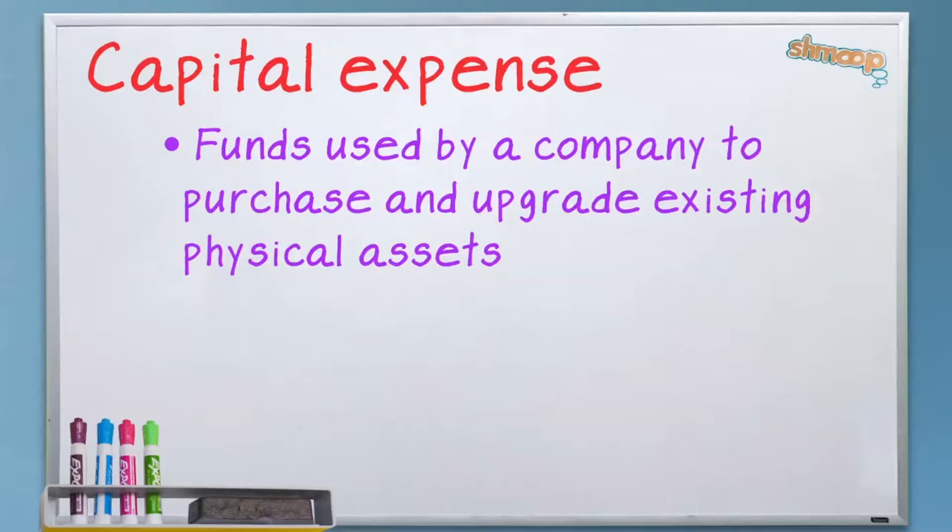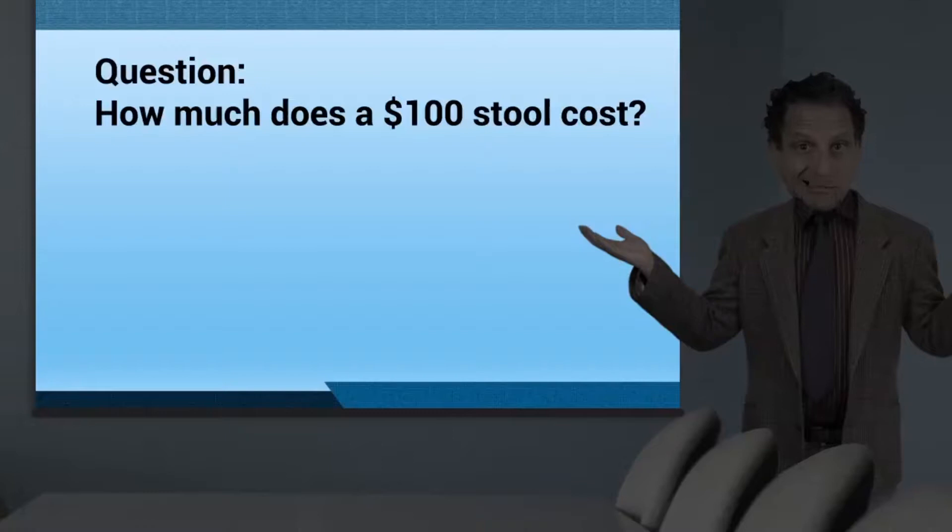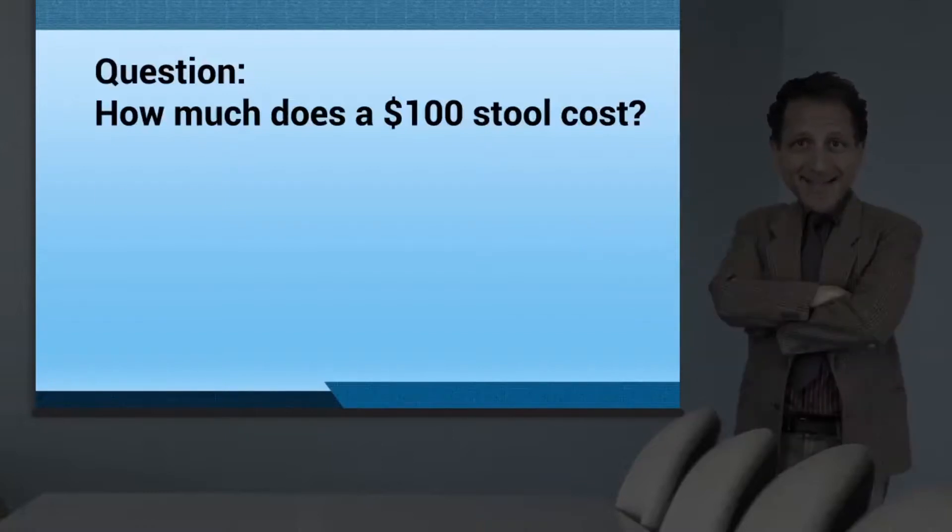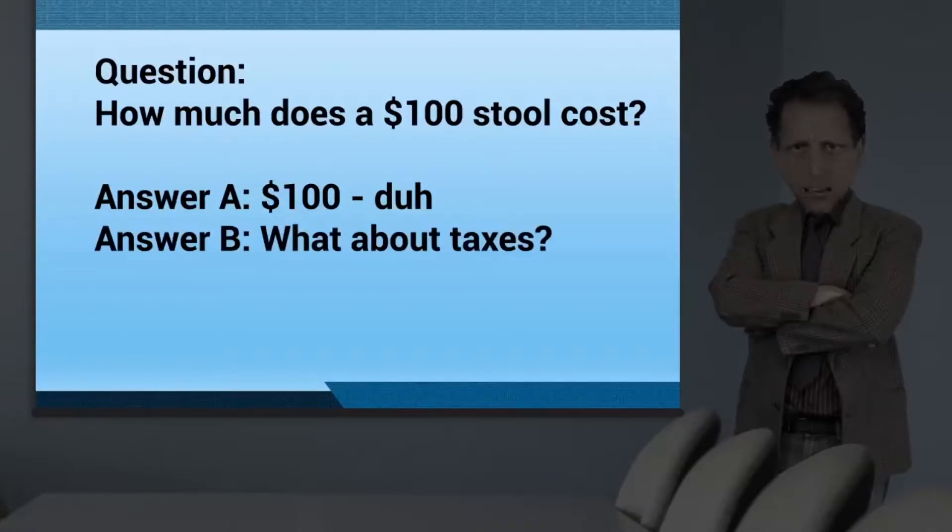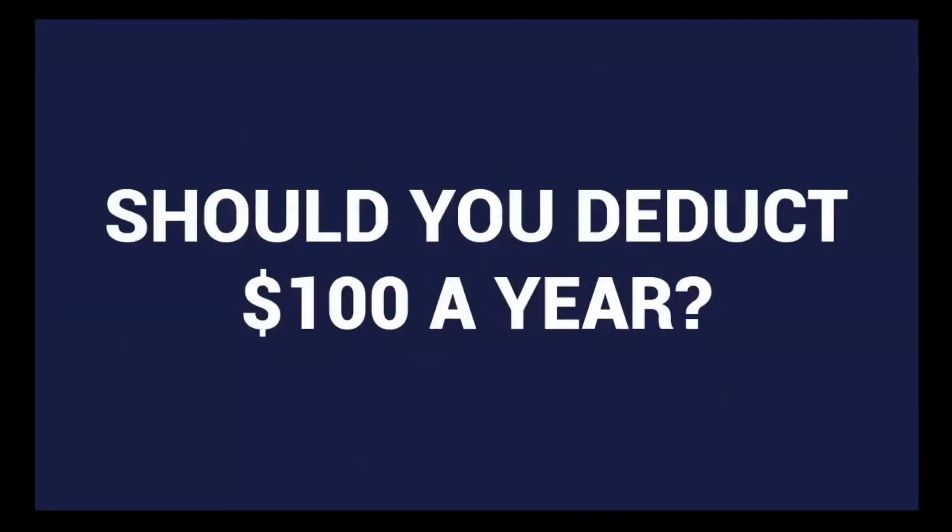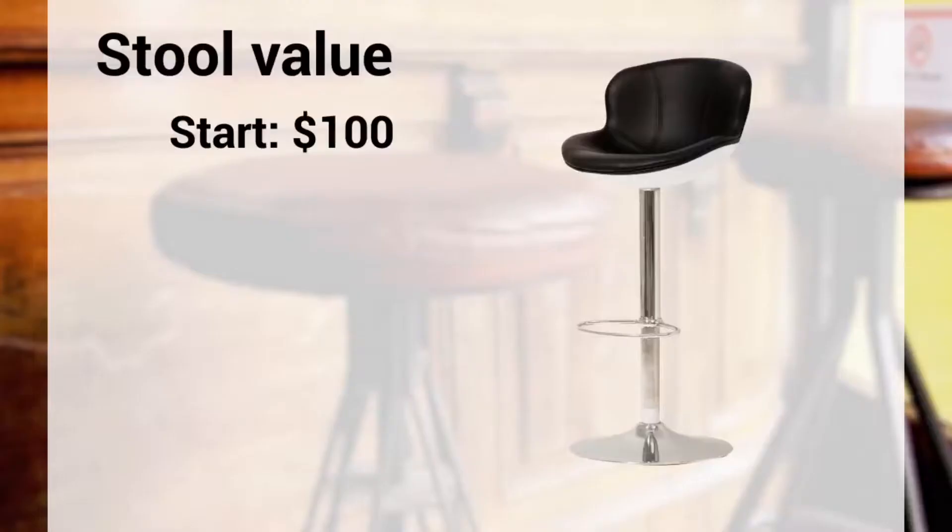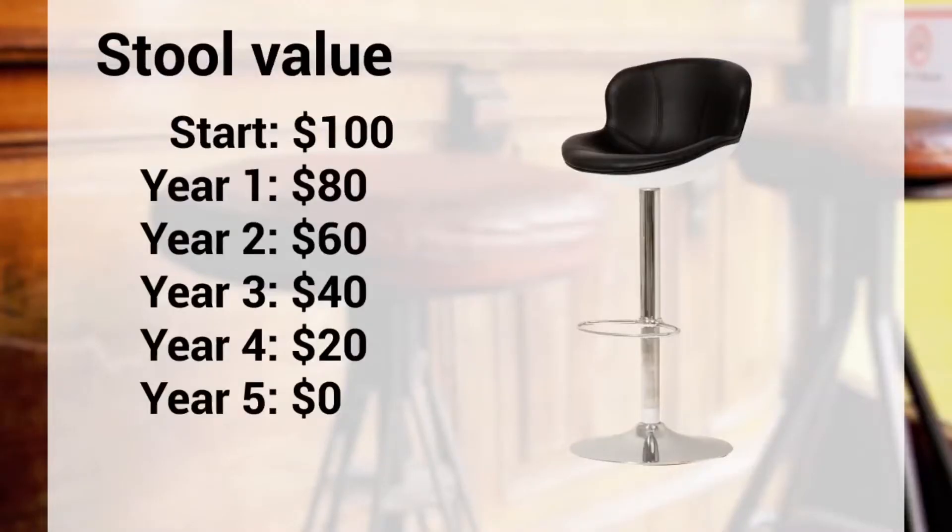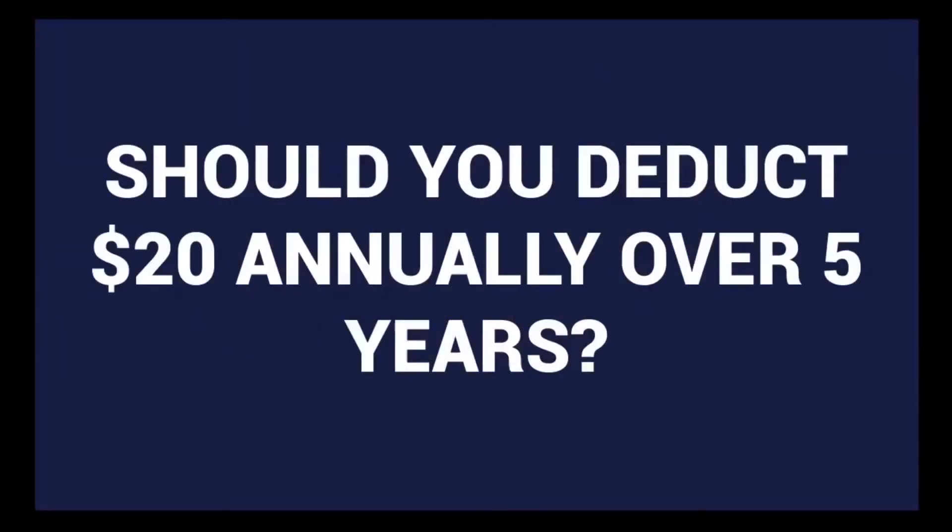So here's a tricky one for you. If you spent a hundred bucks on a stool, how much did it cost? For accounting nerds, here we go. Answer A, duh, a hundred bucks. Answer B, before or after tax? Extra point for that one. Can you expense the full hundred dollars as soon as you've committed to pay for it? Should you? If the stool will last five years and then be worth zero at the end of those five years, then isn't it really a $20 a year kind of expense? Even though you had to pay a hundred dollars in cash for it up front.